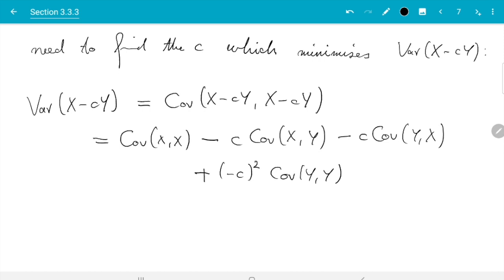And you see first minus c squared equals c squared and also the two middle terms are the same and covariance of x and x is variance of x. So we get variance of x minus 2 c covariance x and y plus c squared variance of y.